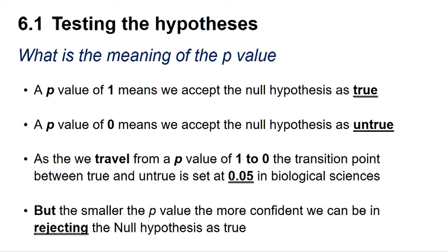A p-value of 1 means we can accept the null hypothesis as true. Whereas a p-value of 0 means we can accept the null hypothesis as untrue.